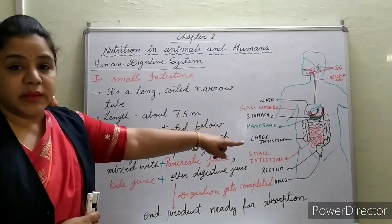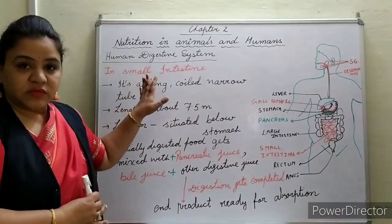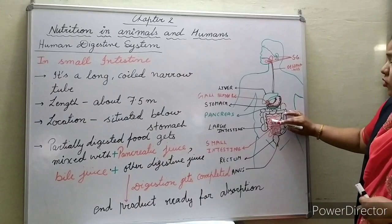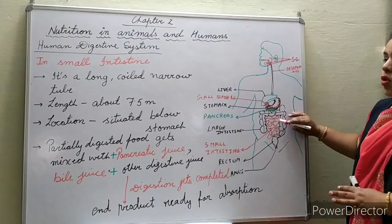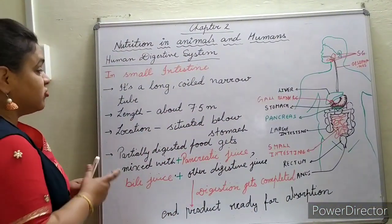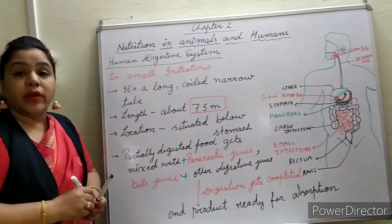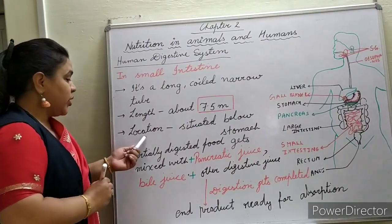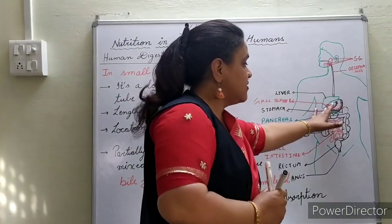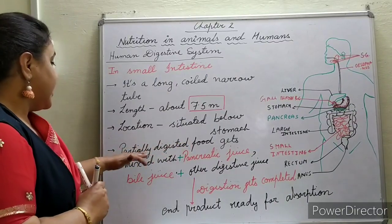Today we will be learning what happens with food in the small intestine. After the stomach comes the small intestine. The small intestine is a long, coiled, narrow tube. Its total length is around 7.5 meters — imagine how long your small intestine is! It is situated below the stomach.